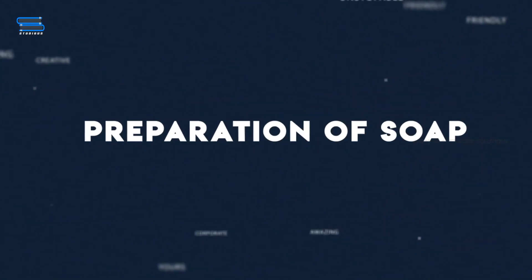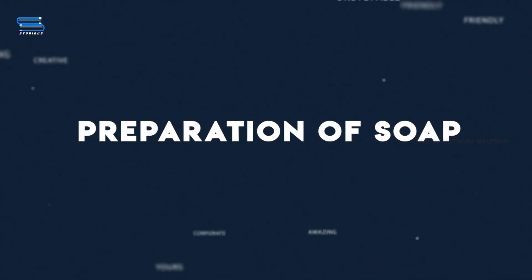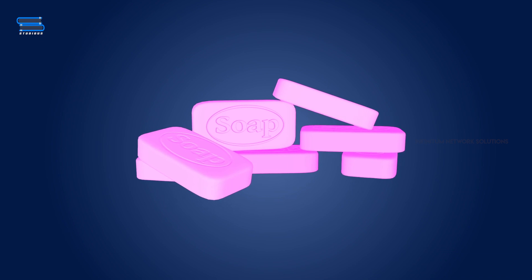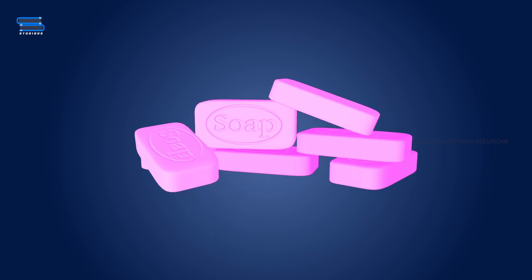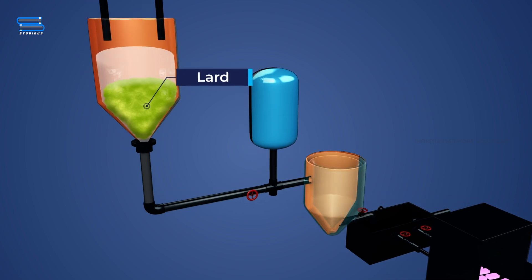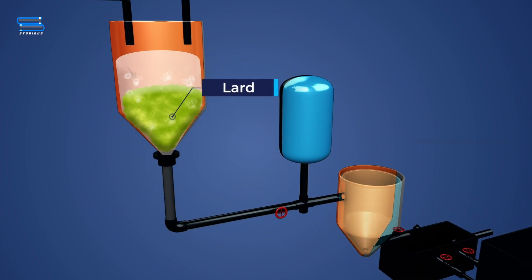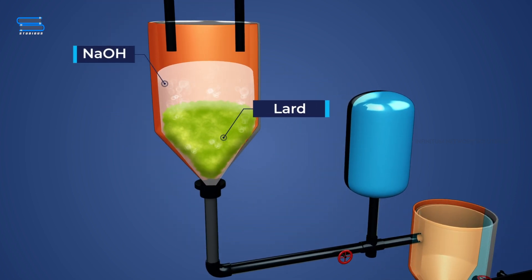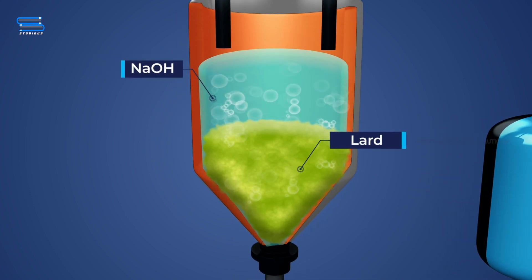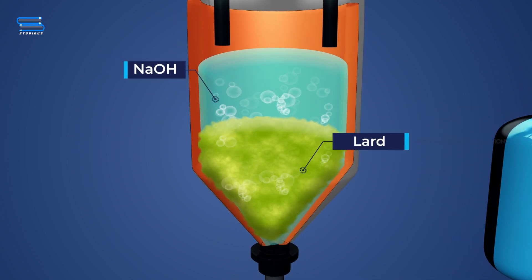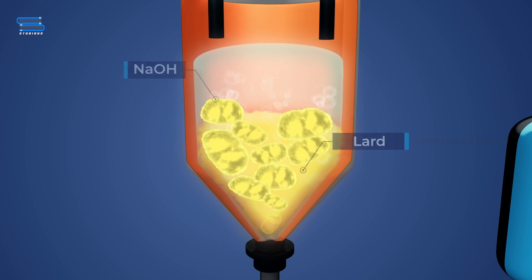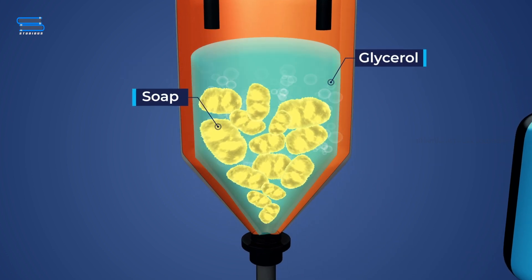Preparation of soap. The preparation of soap from fats is very simple. The only thing needed is to add some fat, for example lard, to a solution of sodium hydroxide and heat the mixture for some time. At a high temperature, the fat undergoes saponification and produces soap and glycerol.